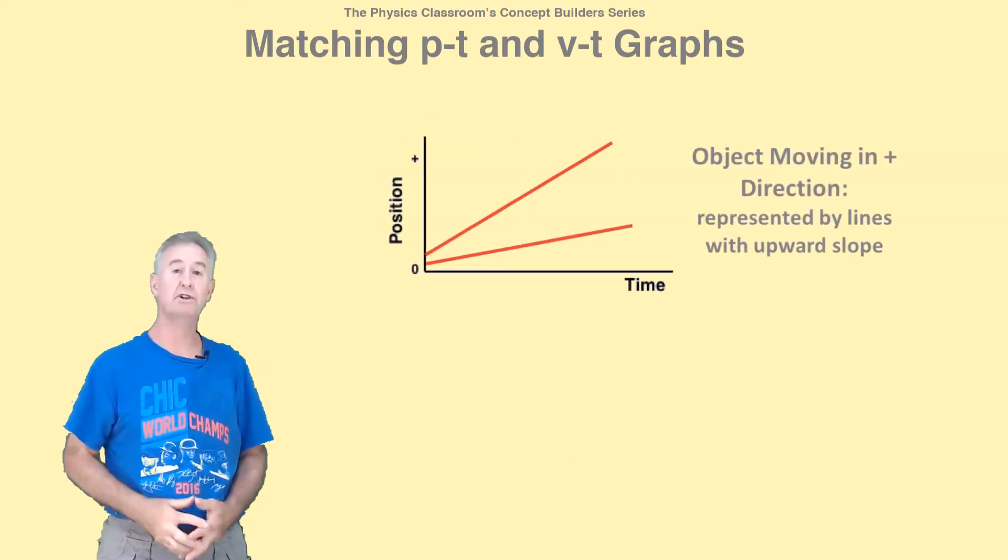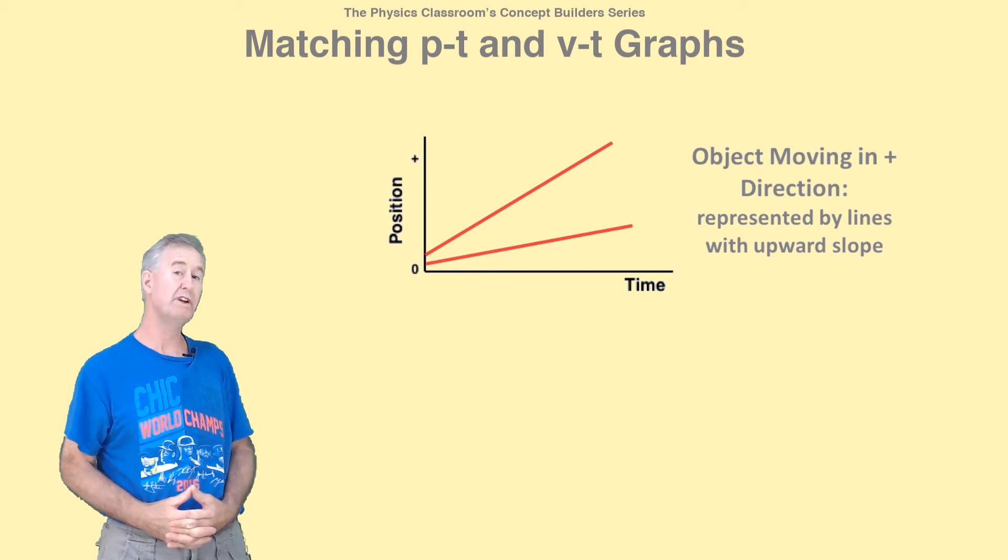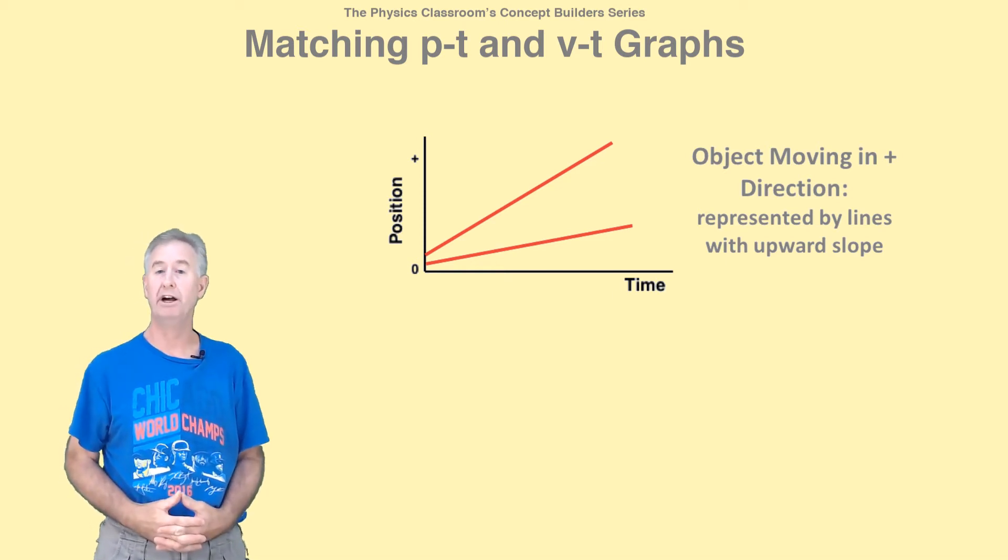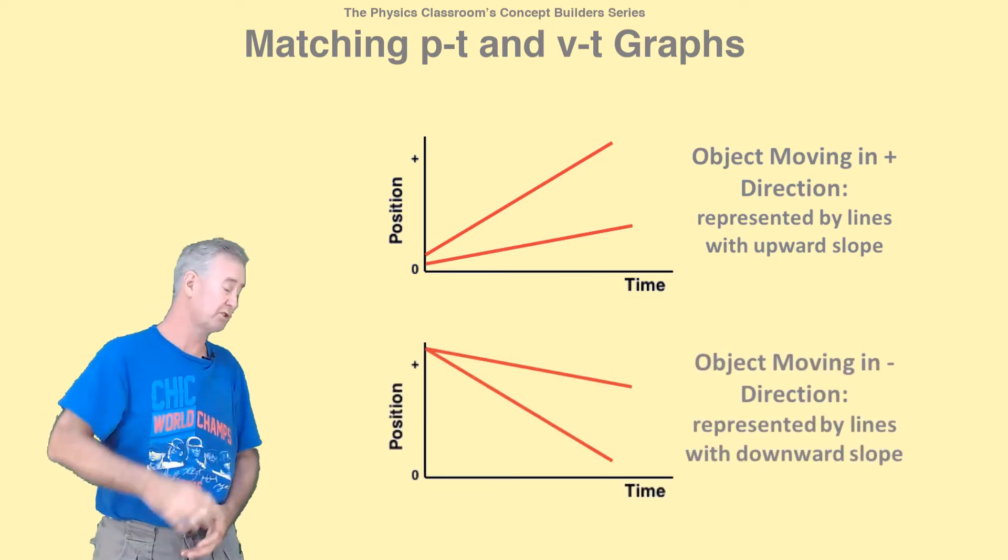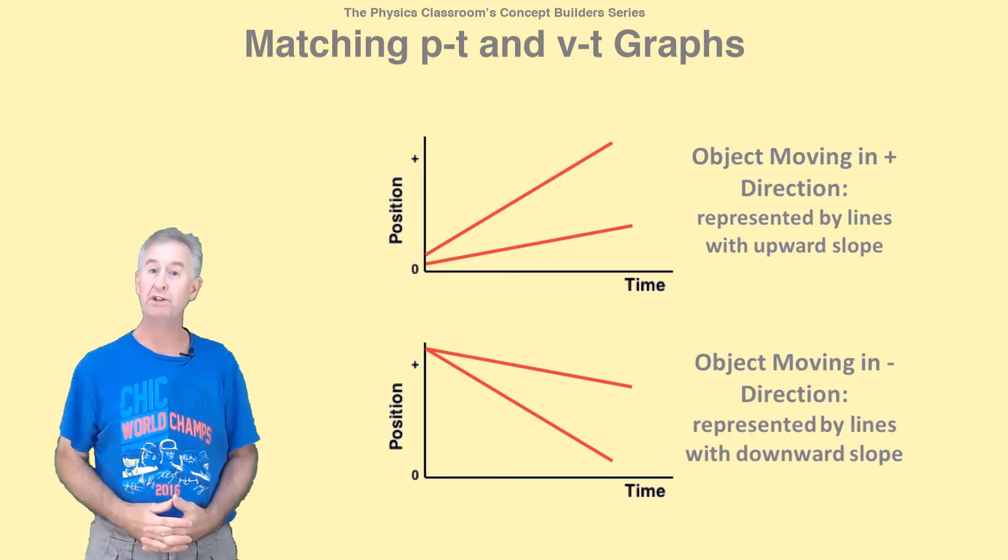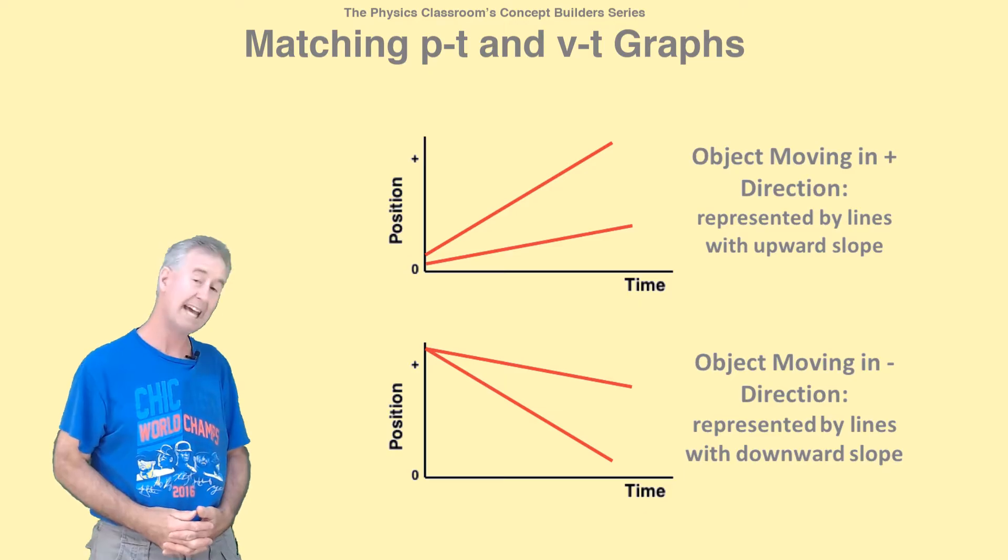Lines with positive slope represent objects that are moving in some sort of predefined positive direction, like to the right or east or upward. Lines that have negative slope or slope downwards represent objects that are moving in the negative direction.